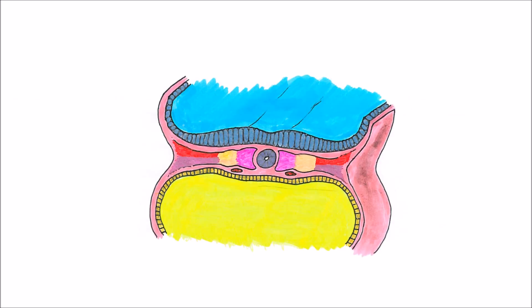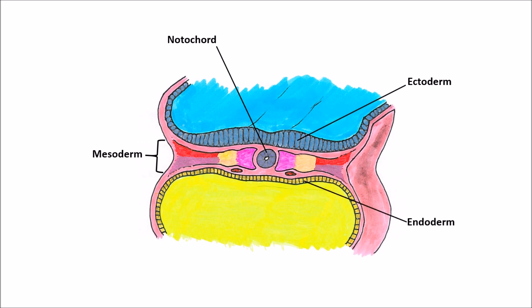To understand how the body cavities develop, we're going to start at the trilaminar embryo stage. The trilaminar embryo is basically three stacked sheets of undifferentiated cells. These consist of the notochord, which induces signaling changes in all three layers: the ectoderm, the mesoderm, and the endoderm.